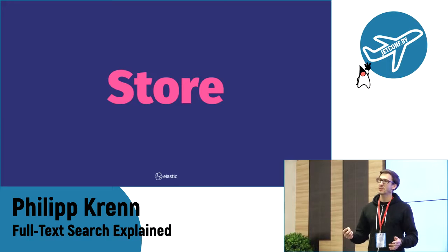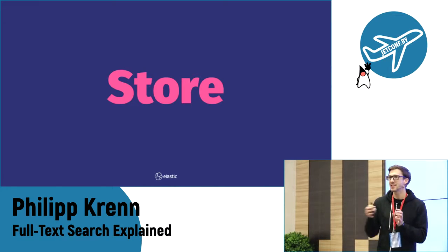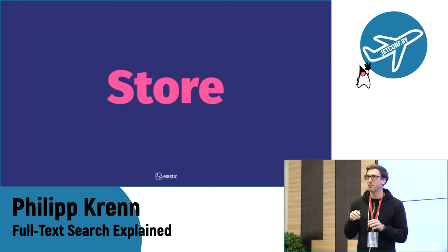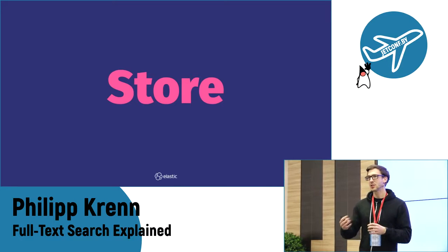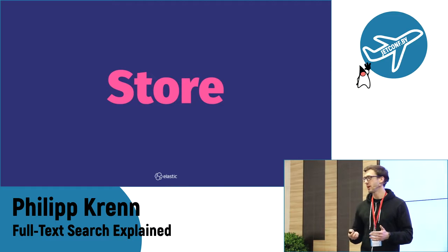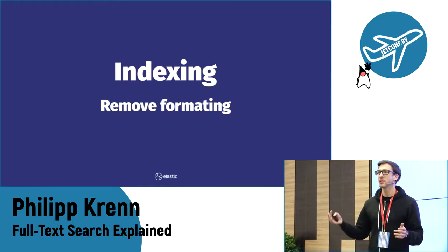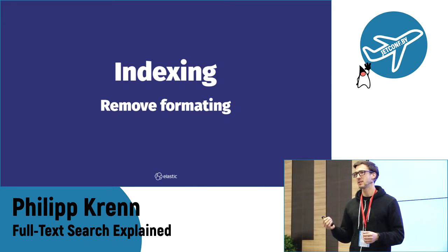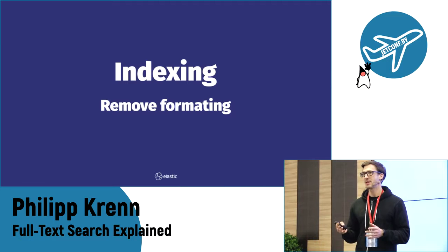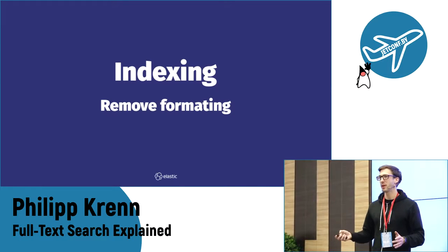When storing data for full-text search, you have more work to do than in a relational or NoSQL database. In a database you just take the stuff and put it on disk. But for full-text search you need to do some more work. The first thing you normally do is remove any formatting — for example, HTML tags — because nobody wants to search for HTML tags. It just doesn't add meaning to what you're searching for; it's just layered information you throw out.